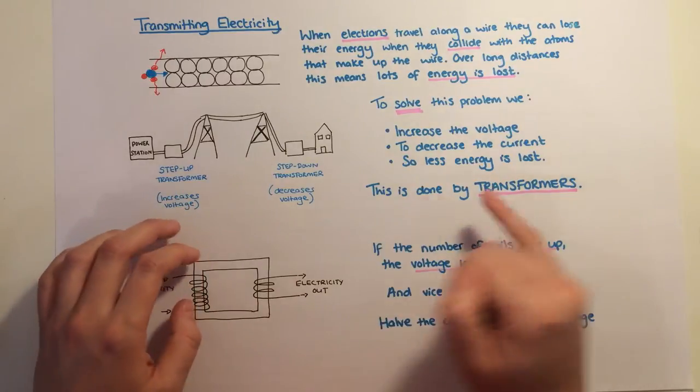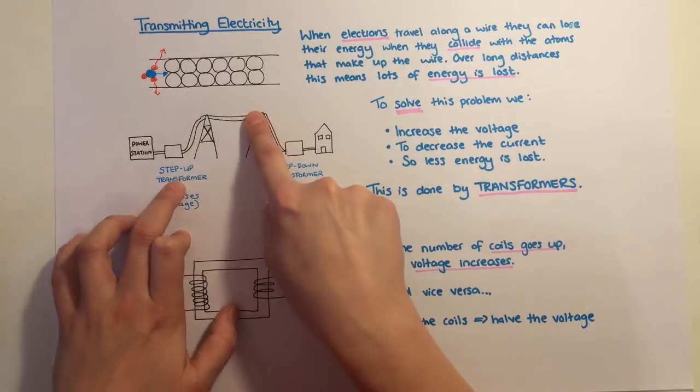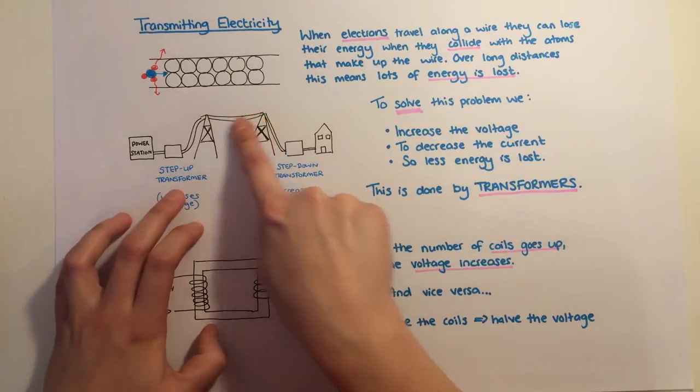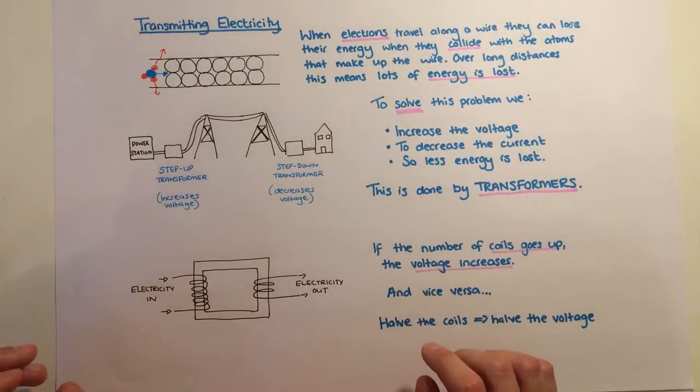The way we actually increase the voltage is to use these objects here, transformers. We increase the voltage up to around 400,000 volts in the wires, but then of course we have to decrease it back down again before it comes into our homes.